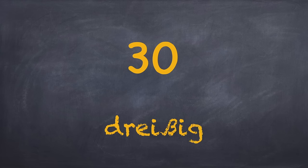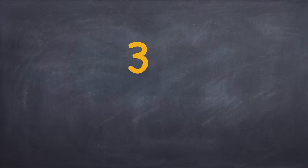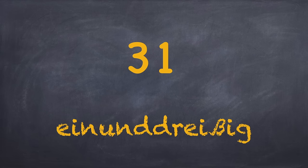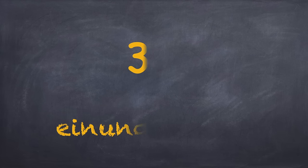Dreißig. Now just like 21 to 29, the numbers go on from 31 to 39. So the next one will be einunddreißig. Continuing like this: zweiunddreißig, dreiunddreißig.